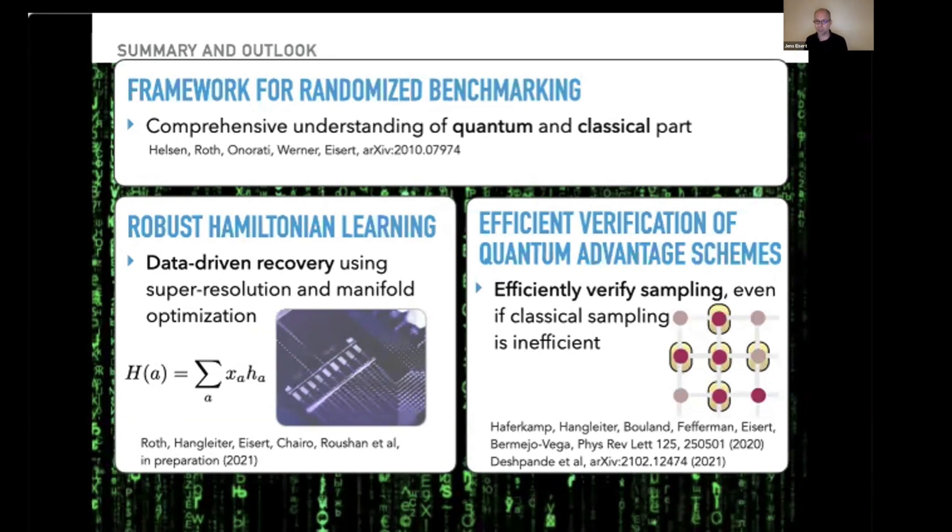Also in the context of efficient verification of quantum advantage schemes that are aiming at showing that quantum devices can do more than classical schemes. There's the curious and interesting situation that sometimes these devices provide samples one cannot do classically efficiently to a good approximation, but at the same time one can efficiently verify the correctness of the scheme. You do not know the outcome, but sometimes you can verify the correctness of a quantum device even if you cannot efficiently predict the outcome.